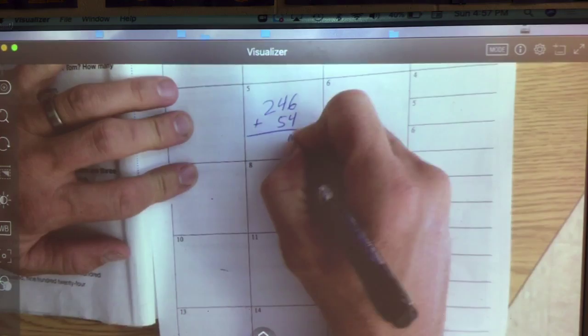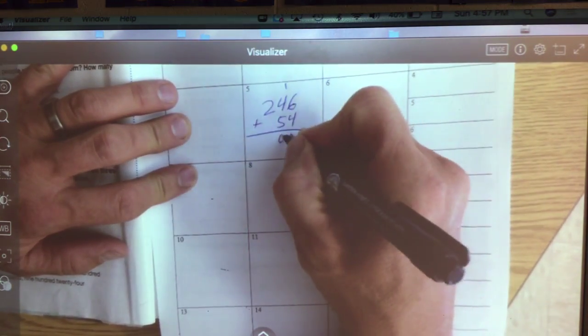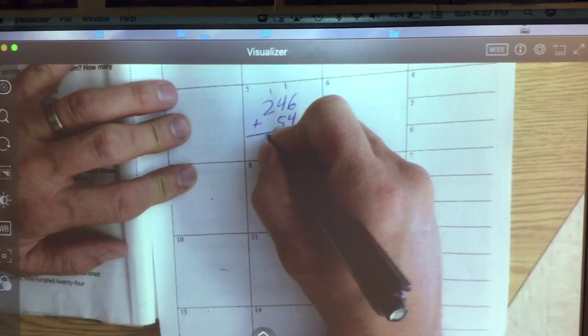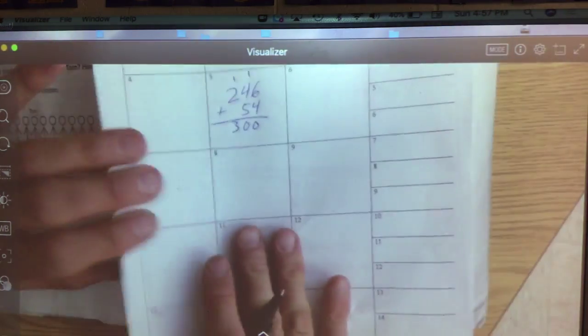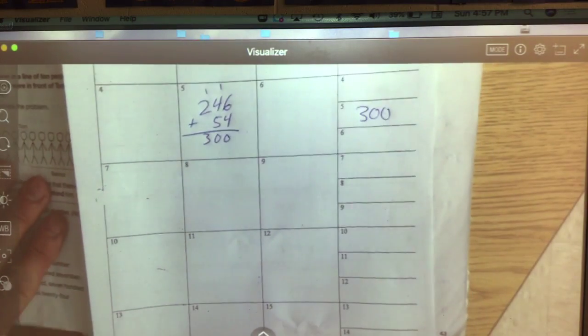6 plus 4 is 10, carry 1. 5 plus 4 is 9, plus 1 more is 10. 0 down, carry 1. And 2 plus 1 is 3. No dollar sign on this one, so my answer is 300.